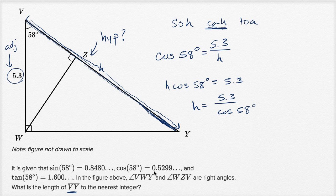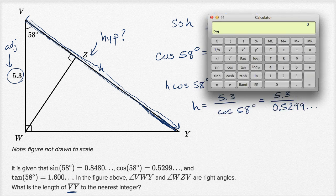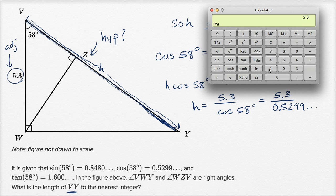And they tell us what the cosine of 58 degrees is—it's 0.5299. So this is going to be equal to 5.3 divided by 0.5299. And we need to figure out what this is to the nearest integer, so definitely want to get a calculator out for that. So we have 5.3 divided by 0.5299. I'm just going to use the numbers they gave us even though my calculator has a cosine function. We'll round it to the nearest integer—this is going to be equal to 10. So this is the length of this side over here, is going to be equal to 10.